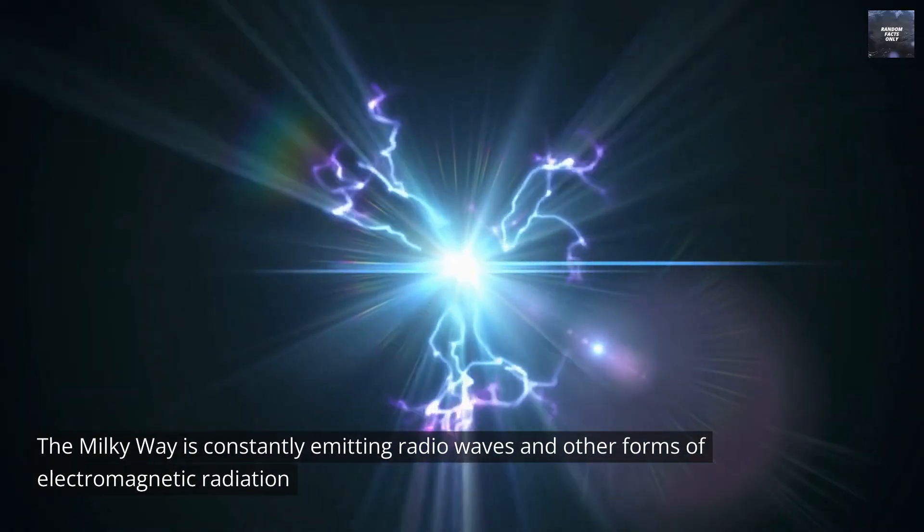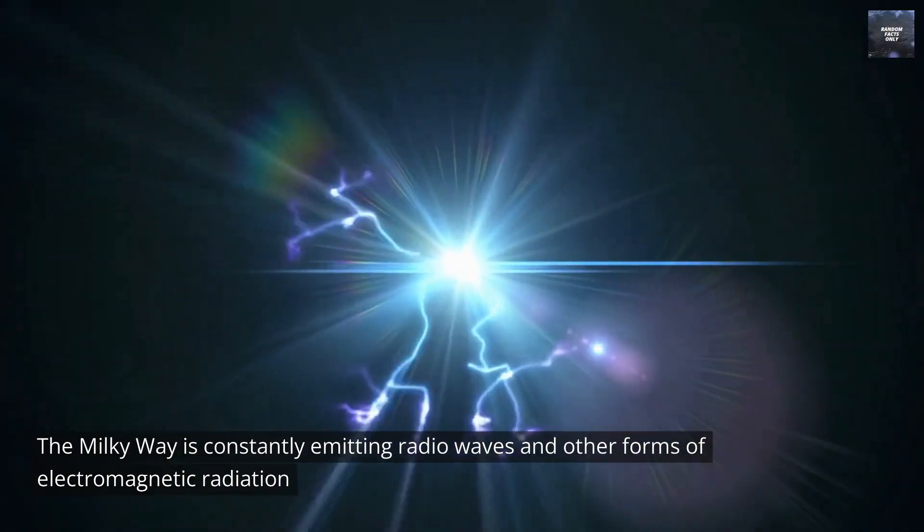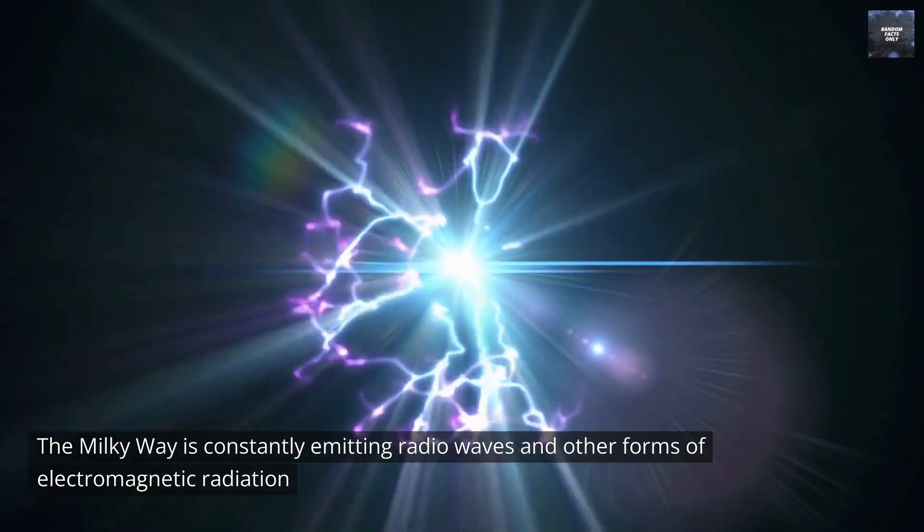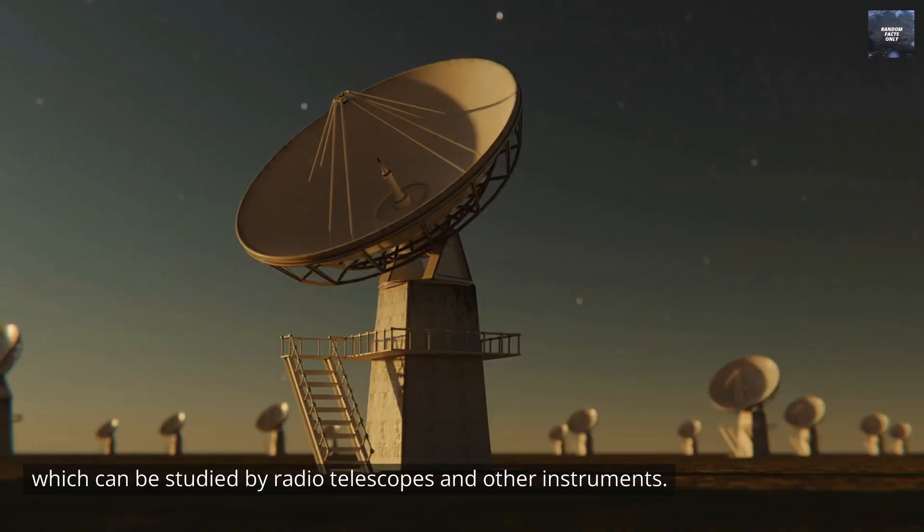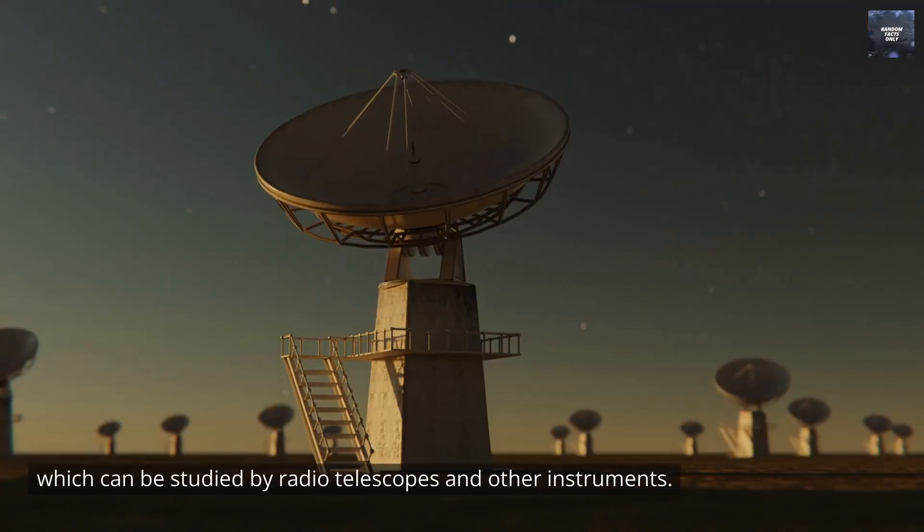The Milky Way is constantly emitting radio waves and other forms of electromagnetic radiation, which can be studied by radio telescopes and other instruments.